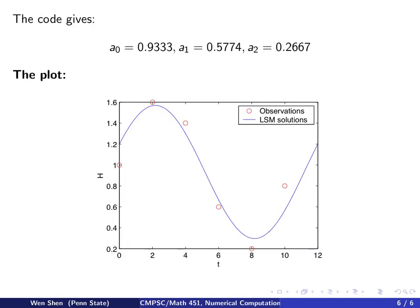So first the code gives me the coefficients A0, A1, and A2. These will be the A1, A2, A3 in the A vector, and I list it here. That's what I get. And then the plot looks like this.